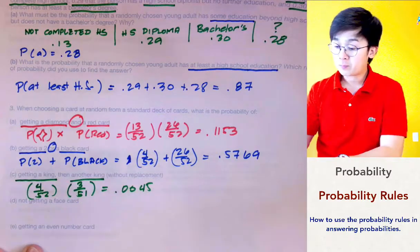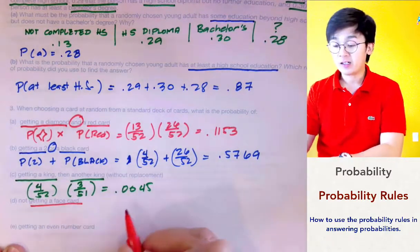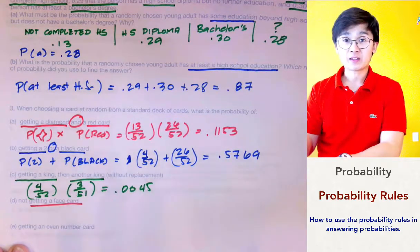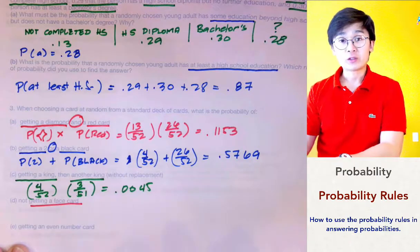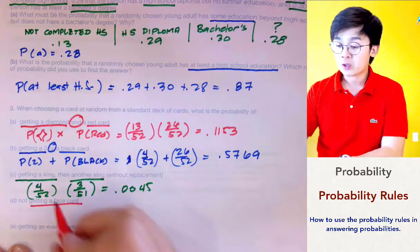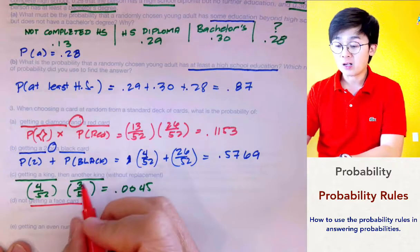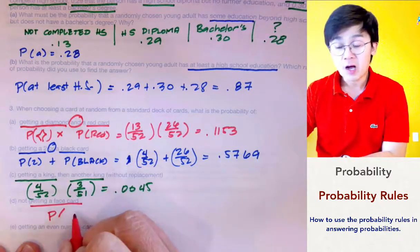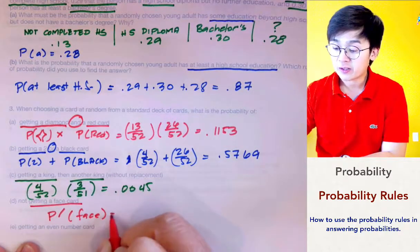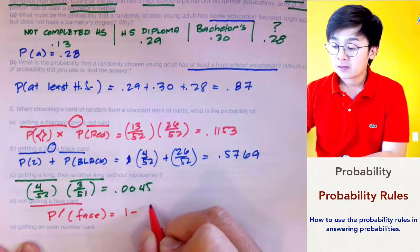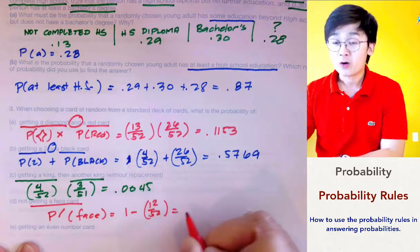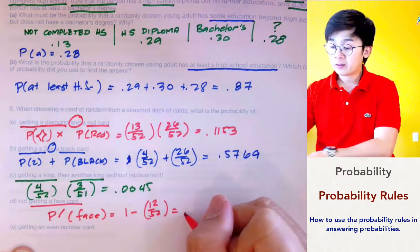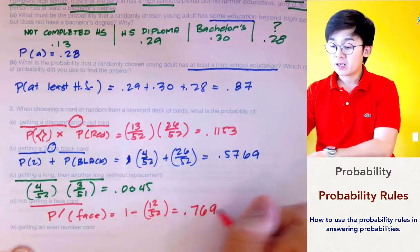For the probability of not getting a face card: face cards are king, queen, and jack — 3 face cards across 4 suits gives 12 face cards. We find the complement: 1 minus 12/52, which equals 0.7692.